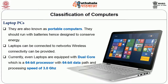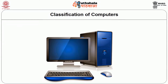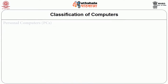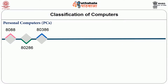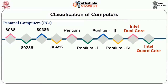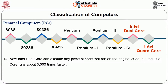Currently, laptops are equipped with dual core, a 64-bit processor with 64-bit data path and processing speed of 3.0 GHz. Personal computers: the most popular PCs are desktop machines. Early PCs had Intel 8088 microprocessors as their CPU. The PC market moved from 8088, 80286, 80386, 80486, Pentium, Pentium 2, 3, 4 and now to Intel dual core and quad core. The new Intel dual core can execute any code that ran on the original 8088 but runs about 3000 times faster, with a 64-bit processor and processing speed of 3.0 GHz.